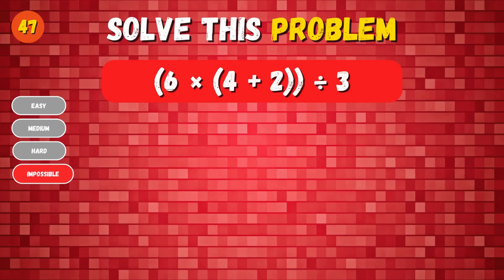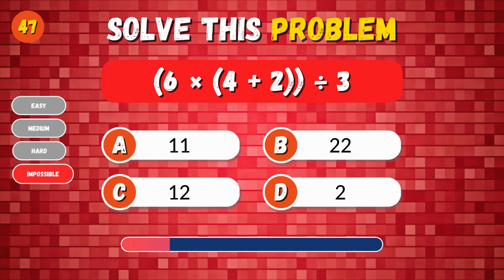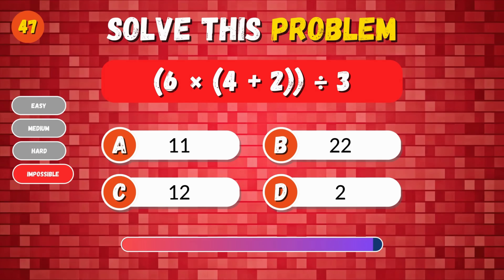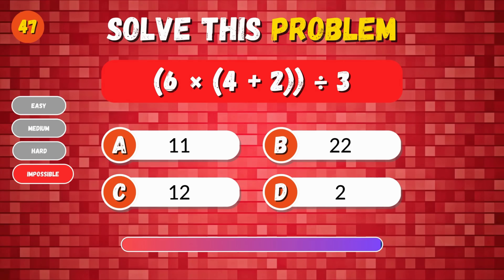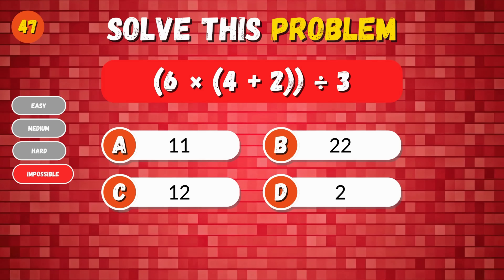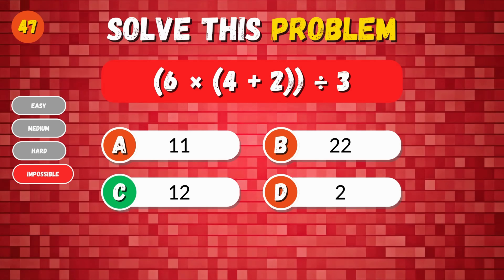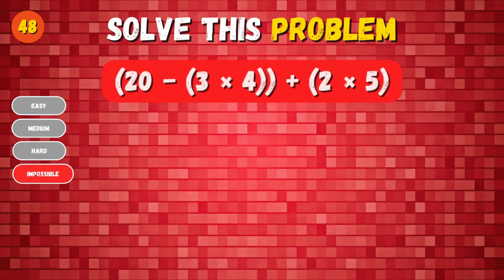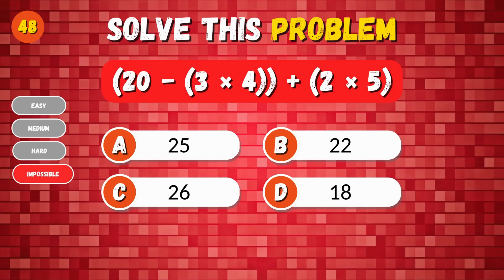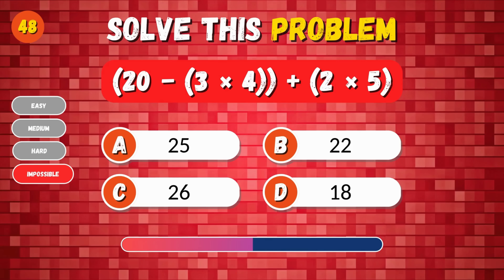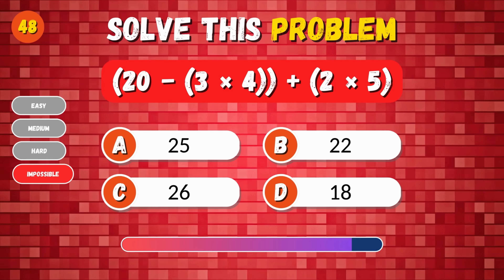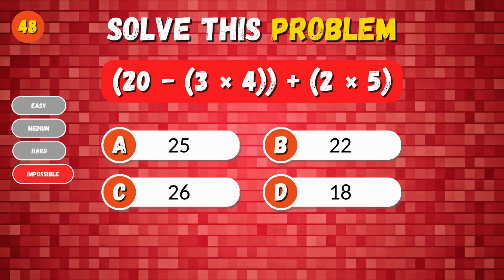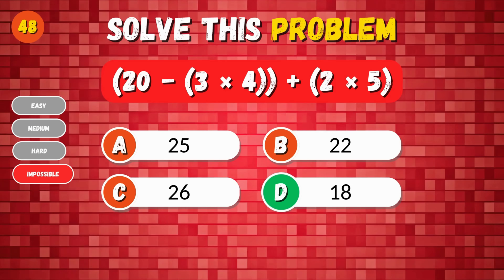8. 6 times 4 plus 2 divided by 3. 12. 20 minus 3 times 4 plus 2 times 5. 18.